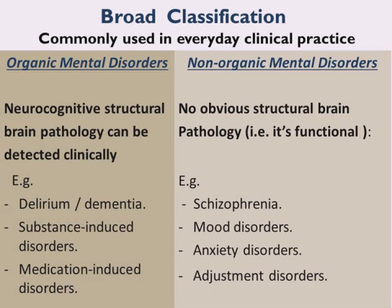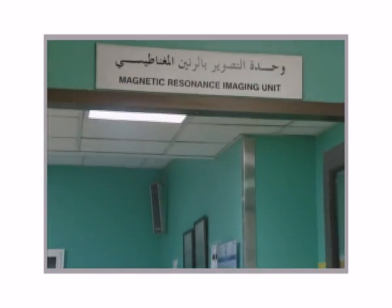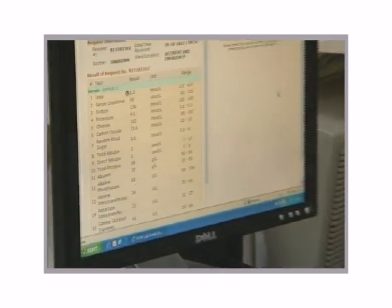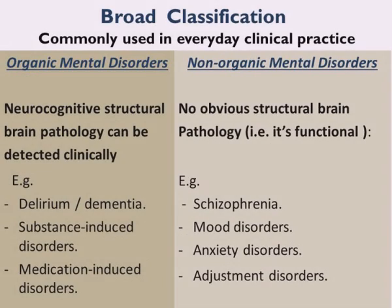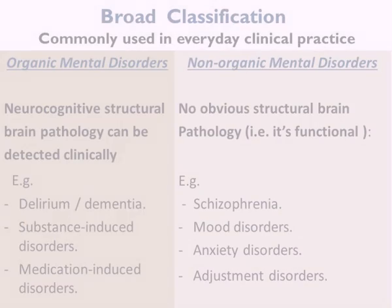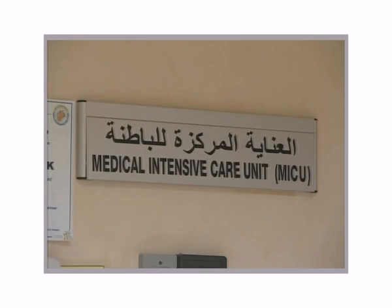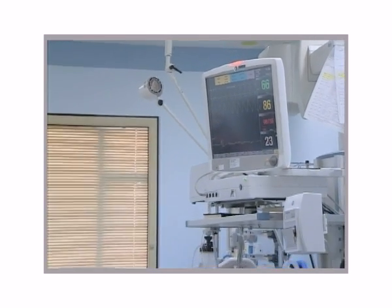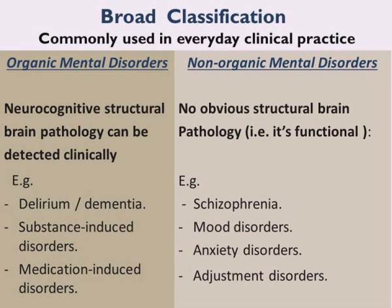What do we mean by organic mental disorders? We mean that neurocognitive structural brain pathology can be detected by clinical assessment or usual lab tests. Examples of these organic mental disorders include delirium, dementia, substance-induced disorders, medication-induced mental disorders, and so on.